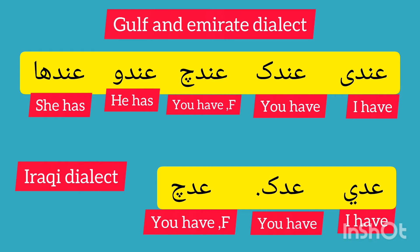But in the Iraqi dialect we don't say 'indi' — instead we say 'idi,' 'itak,' 'idich.' So instead of 'indi,' we say 'idi' or 'idich.'